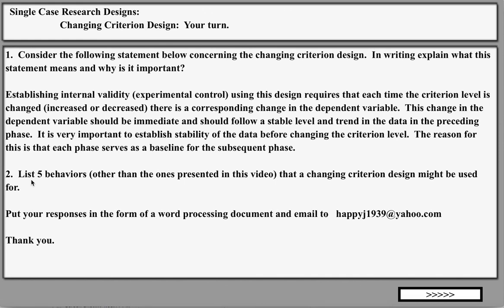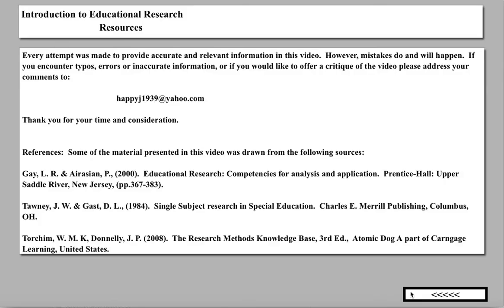For the second part of the assignment, list five behaviors other than the ones presented here that a changing criterion design might be used for. Put your responses in a Word document saved under your name underscore changing criterion design, and email it to happyjade1939@yahoo.com. If you're in a master's thesis program and considering a classroom-based thesis, the changing criterion design might be a great option for behaviors that need to be increased or decreased. Thank you very much — see the resources listed, including the classic seminal text on single subject research by Tawney and Gast from 1984. See you next time.